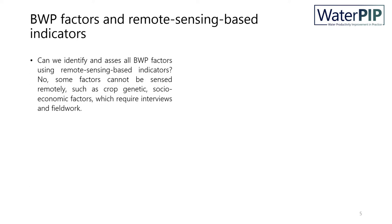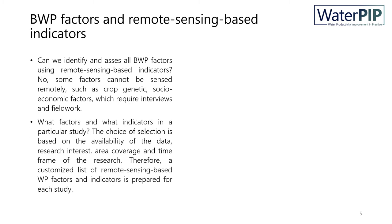You might have a question: can we identify all kinds of water productivity factors using remote sensing data? The answer is no. Some factors cannot be sensed remotely, such as crop genetic factors or socio-economic factors. Such factors require fieldwork or interviews. You also might have a question: what factors and what indicators should we consider in our study? It entirely depends on the availability of the data, research interest, area coverage, and timeframe of research.